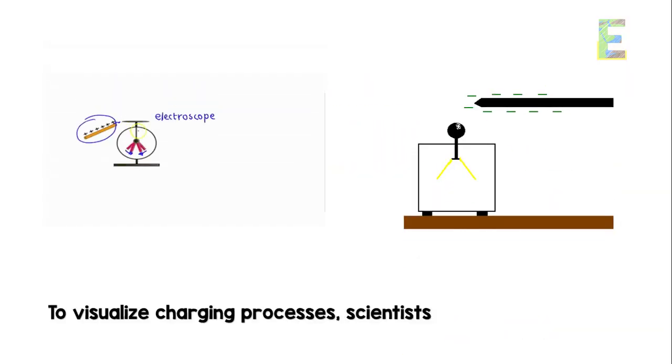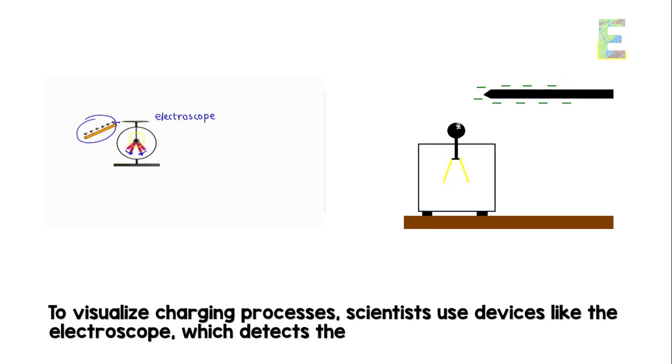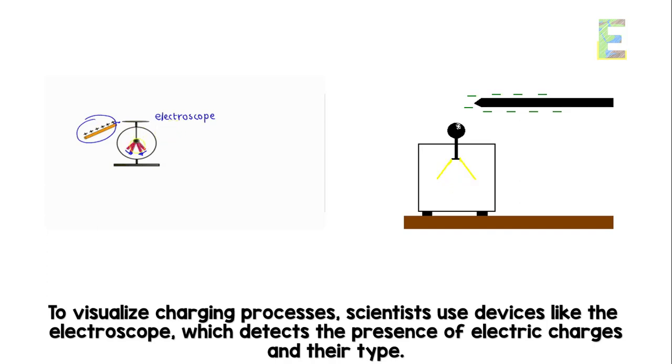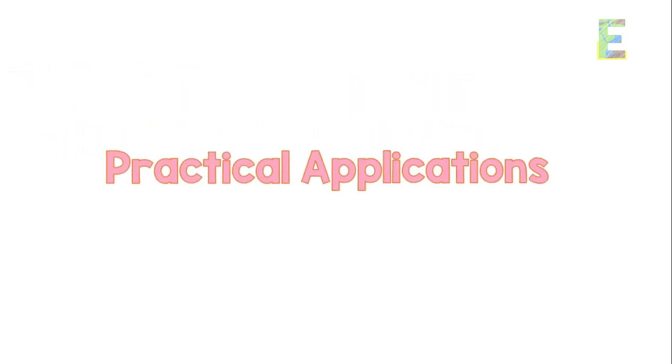Electroscope - to visualize charging processes, scientists use devices like the electroscope, which detects the presence of electric charges and their type.